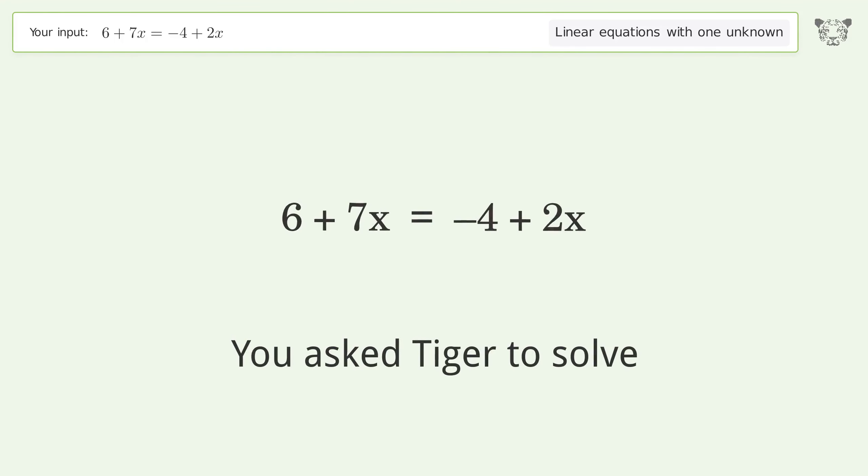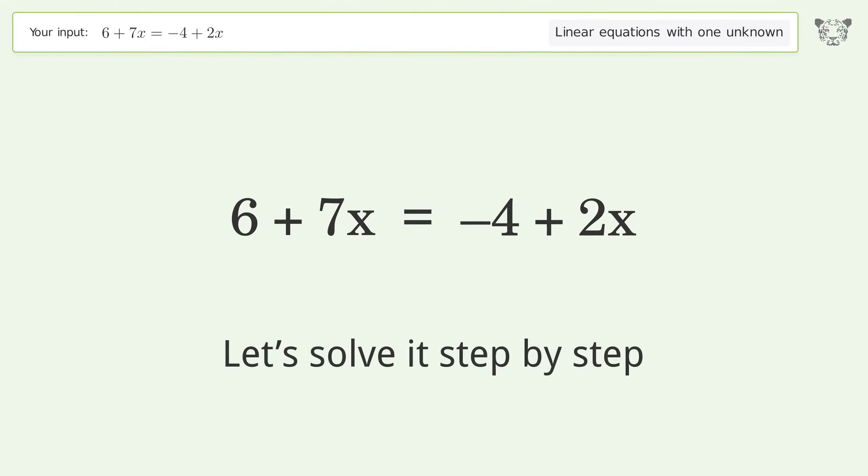You asked Tiger to solve. This deals with linear equations with one unknown. The final result is x equals negative 2. Let's solve it step by step.